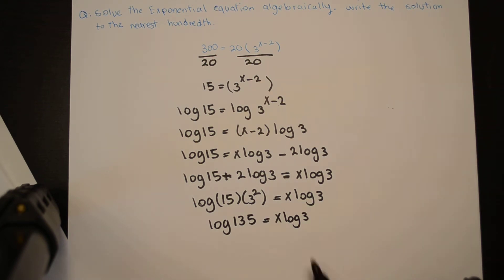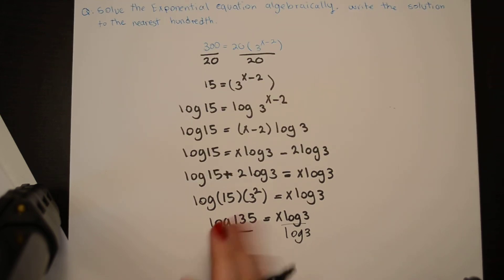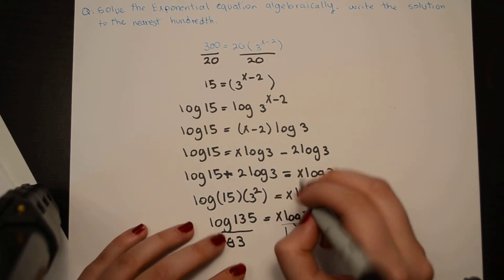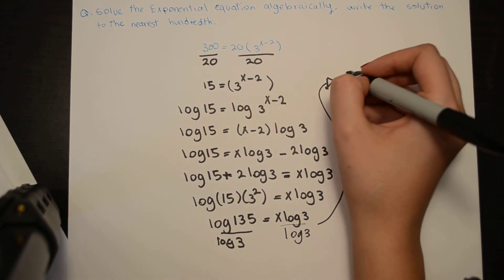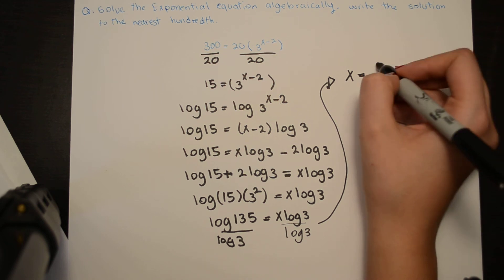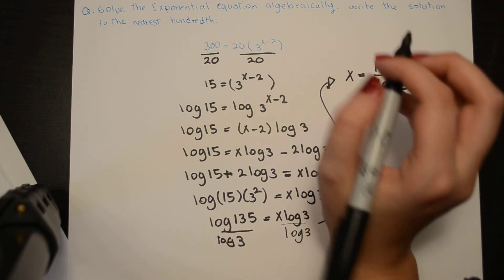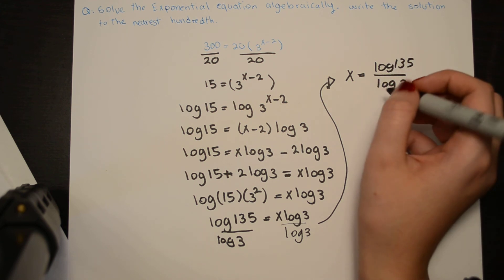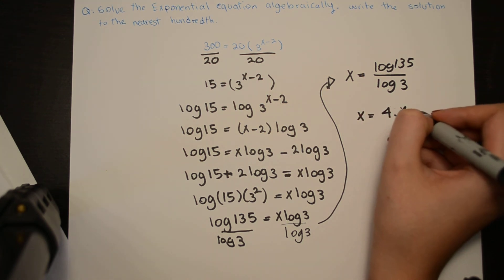In order to isolate x, I need to divide both sides by log 3, which gives us x equals log 135 divided by log 3. Because we need the final answer to the nearest hundredth, we put this in a calculator, and x equals 4.46.